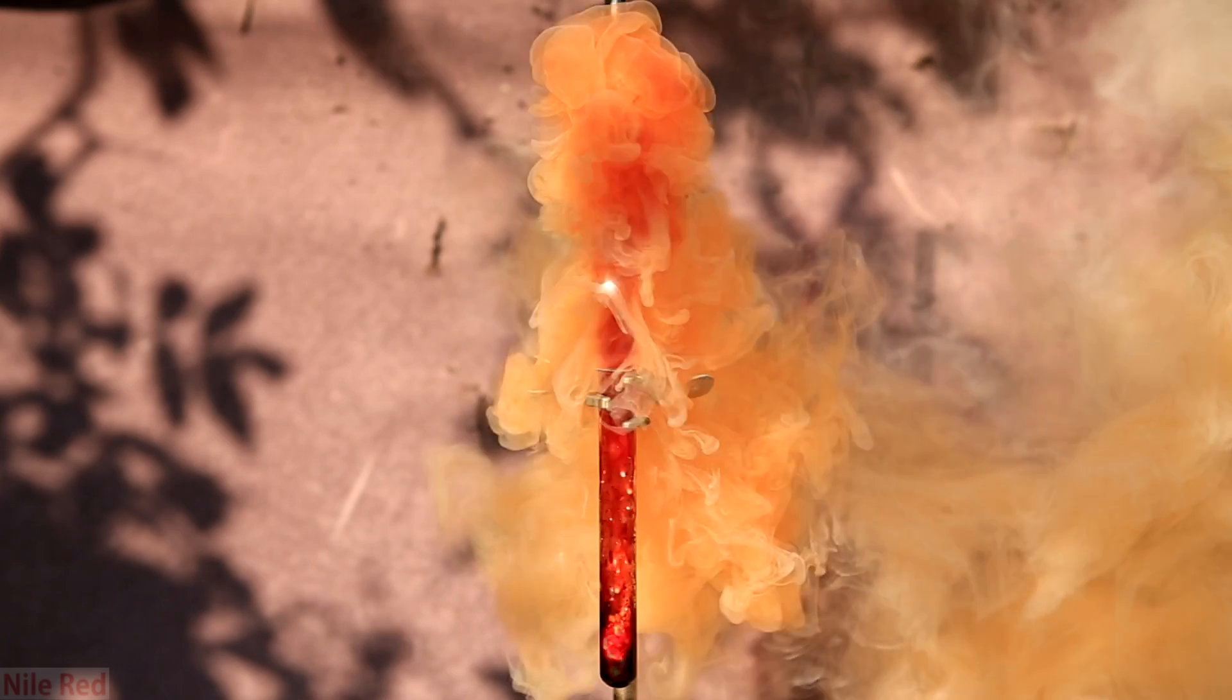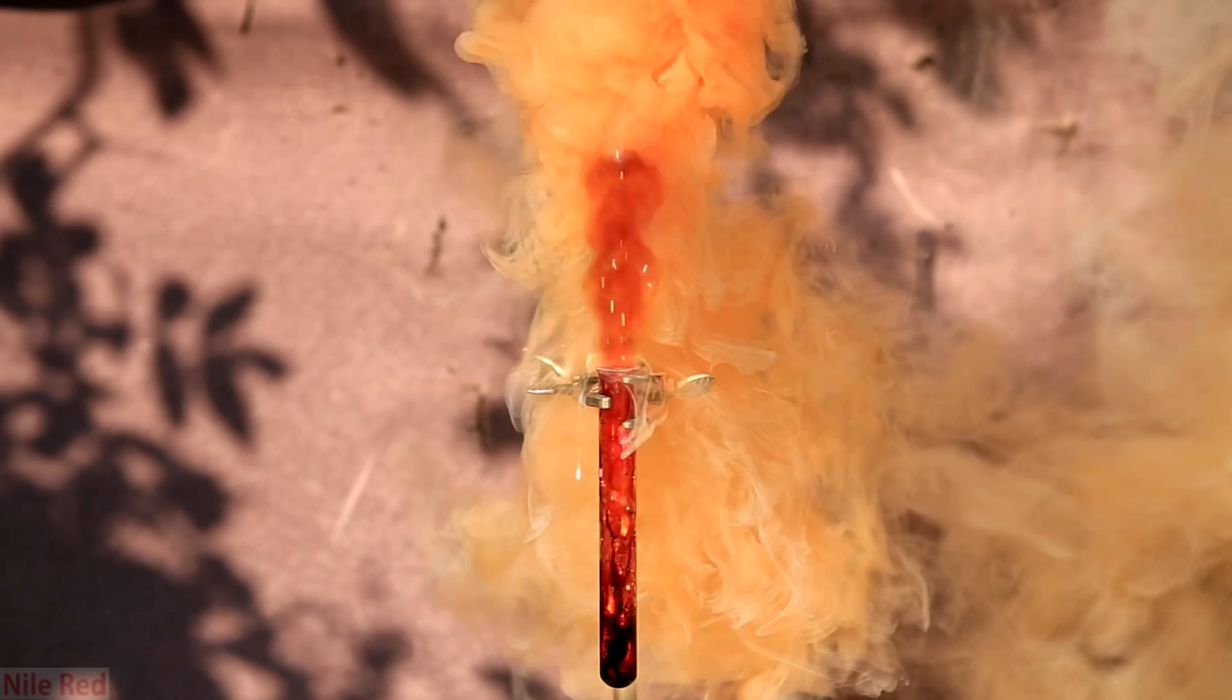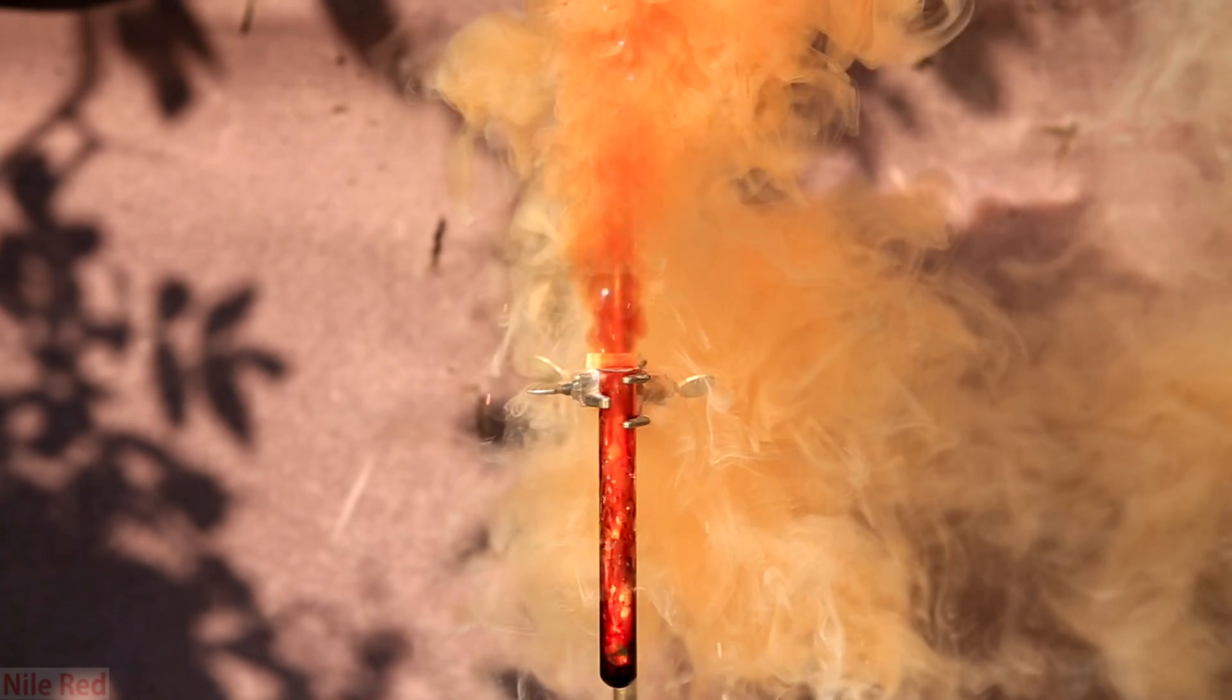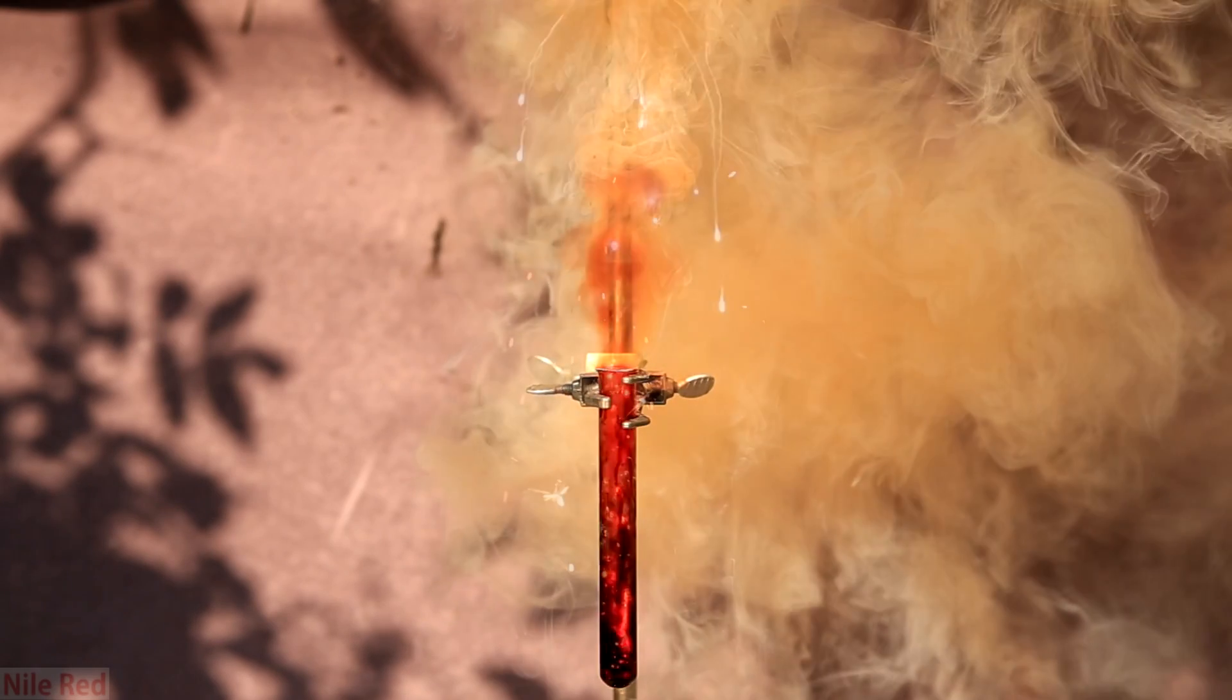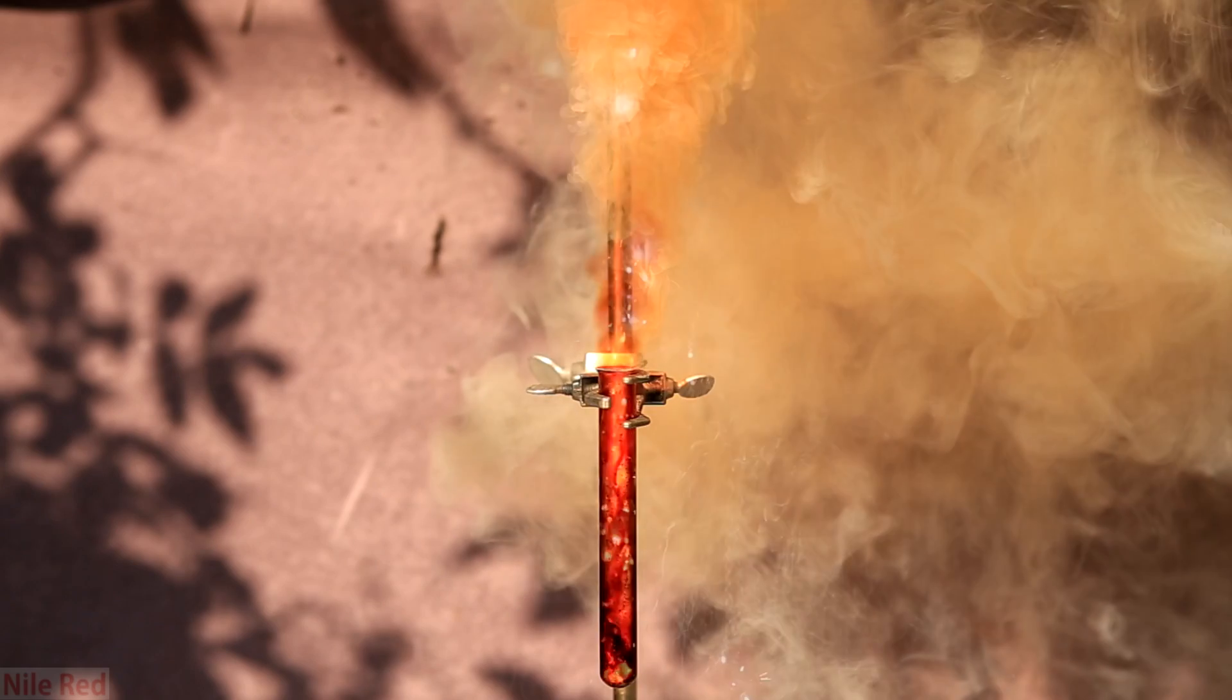When slowed down to about one-fourth the speed, you can actually see a molten red-hot ball of aluminum bouncing up and down the test tube. The white pieces that you see flying out of the test tube is actually liquid aluminum.